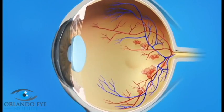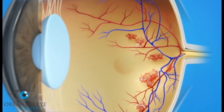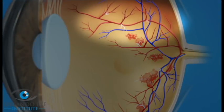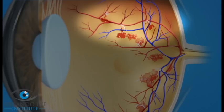With PDR, many blood vessels in the retina close, preventing enough blood from getting to the retina. The retina responds by trying to grow new blood vessels. However, these new abnormal vessels do not provide proper blood flow. They can also bleed, as well as lead to scar tissue that may cause the retina to wrinkle or even detach, leading to vision loss.